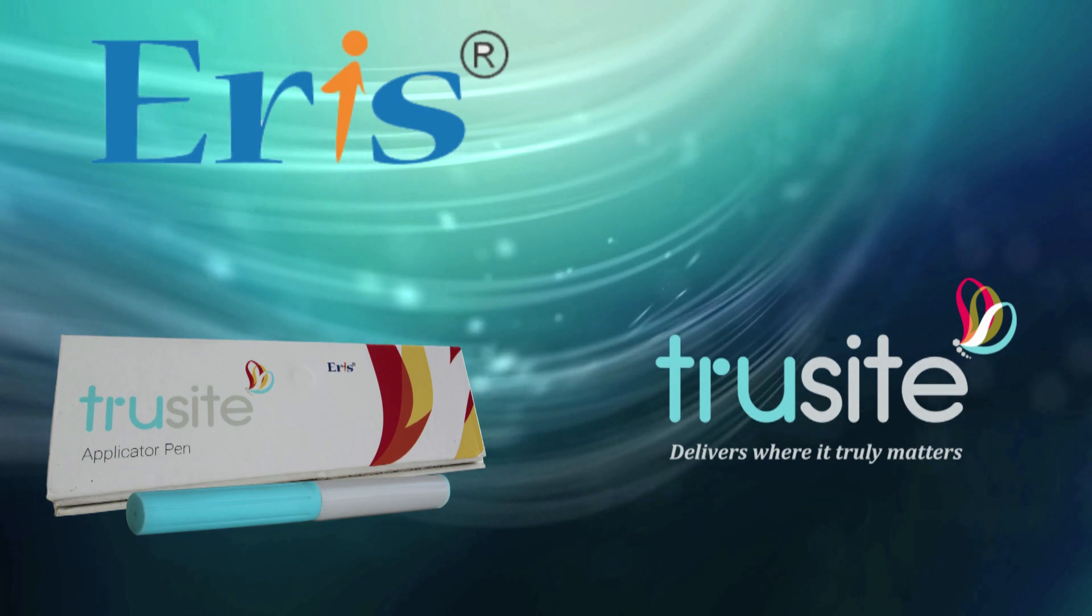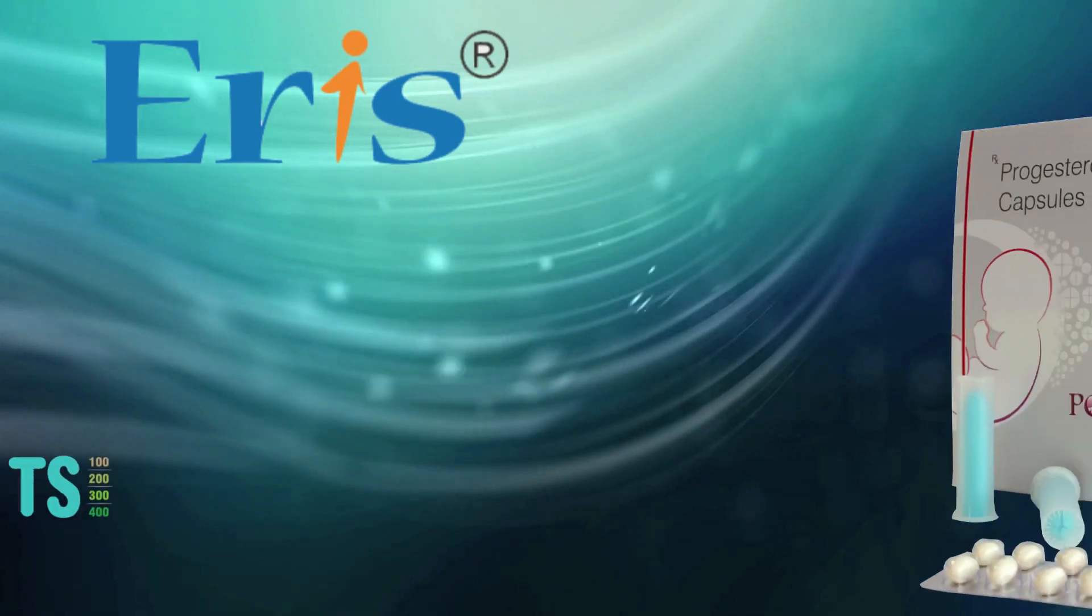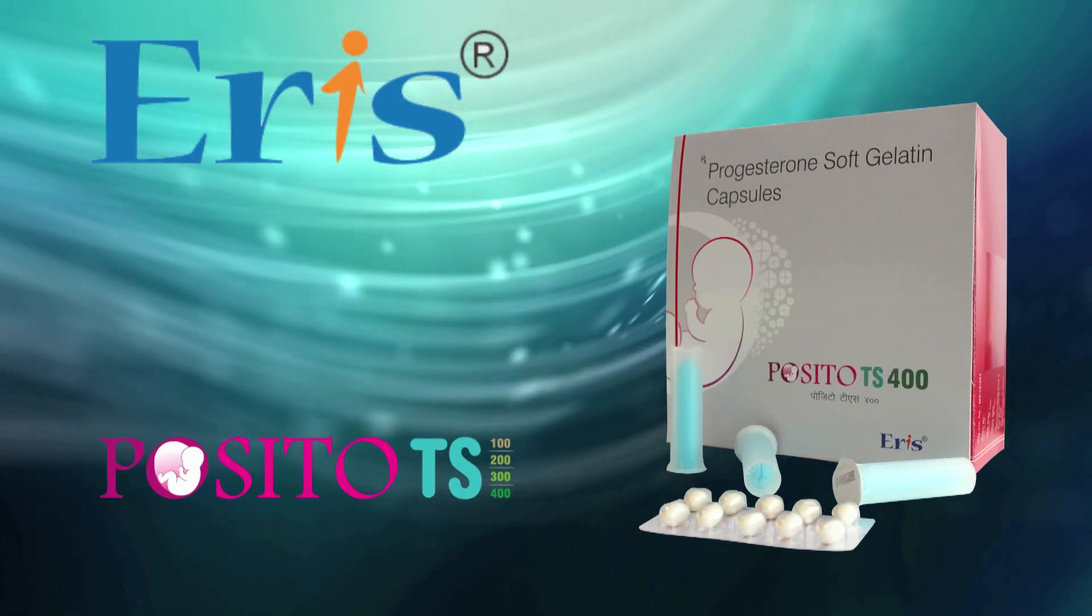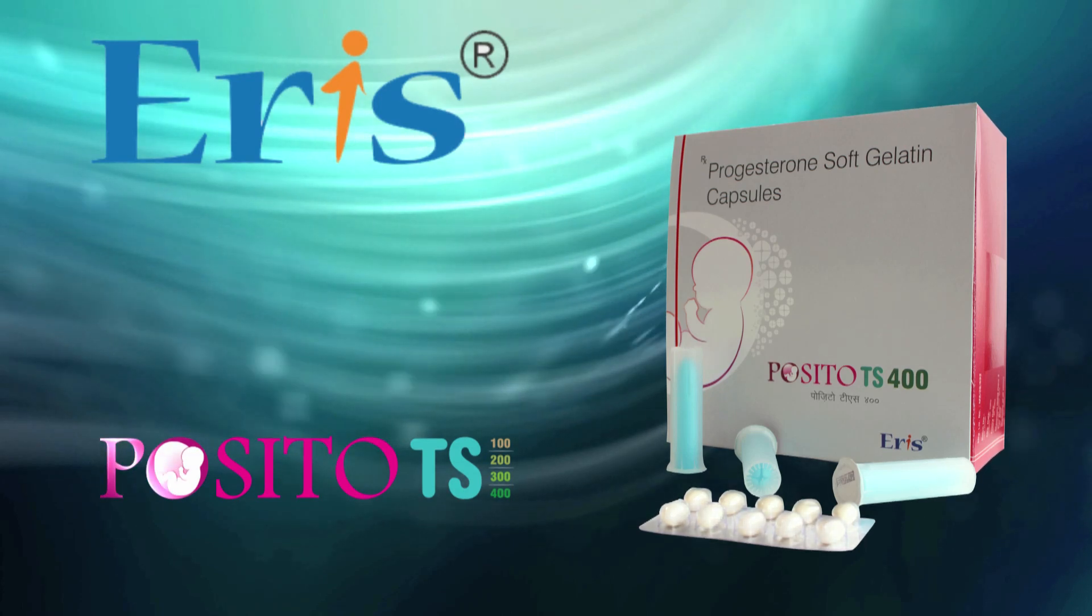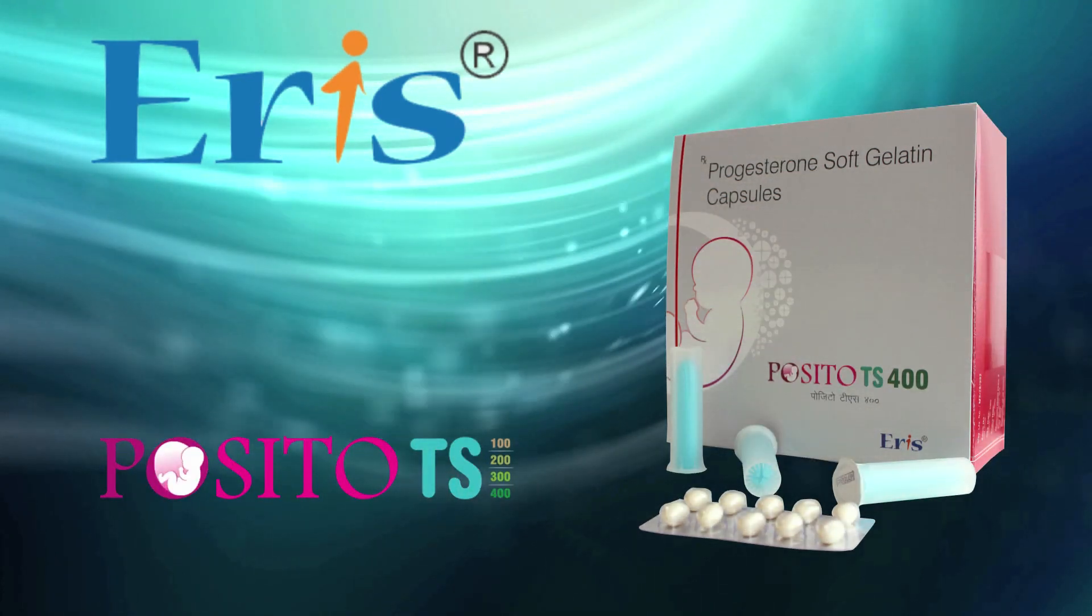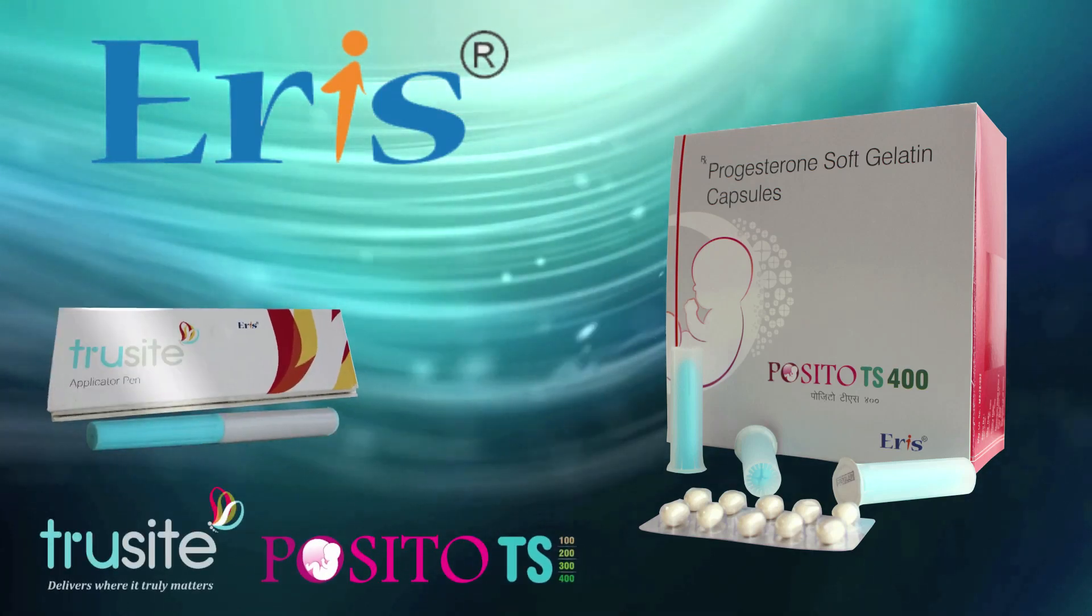TruSight applicator is India's first vaginal progesterone delivery system, as per global standards. The TruSight applicator and PauCito TS kit contains 30 PauCito TS soft gel capsules, 30 sterilized sealed cartridges, and 1 TruSight applicator.